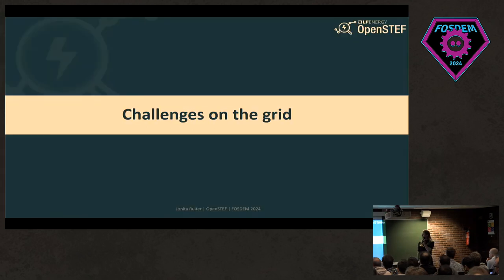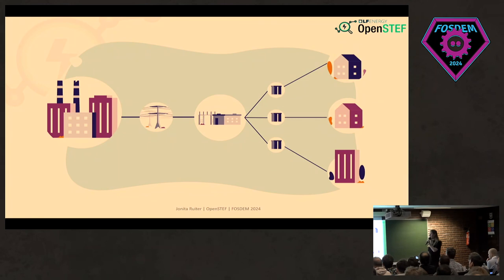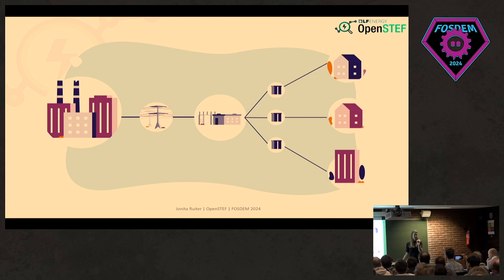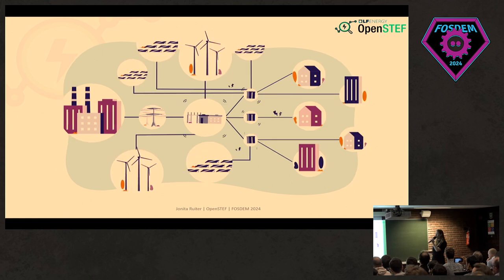So the challenges on the grid. When everything was still good and easy on the electricity grid, it looks like this: on the left you see one big producer, just one direction energy flow, and then we have our consumers — fairly easy. However, due to the energy transition, I think we're all aware, it looks very different now.